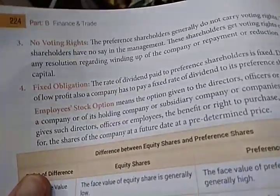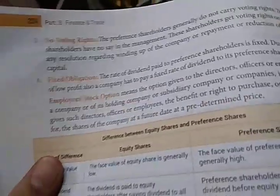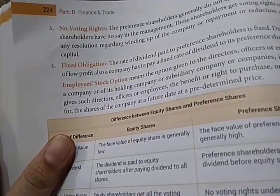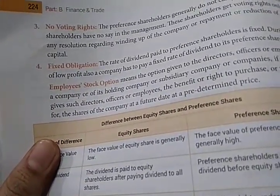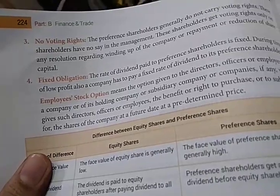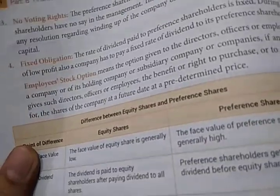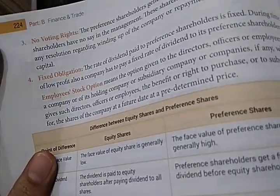Next is no voting rights — preference shareholders are not given voting rights. Next is fixed obligation — the return is fixed, so during low profit periods also the company has to pay a fixed rate of dividend to preference shareholders, which is a disadvantage for the company.